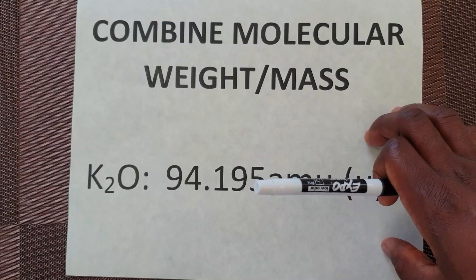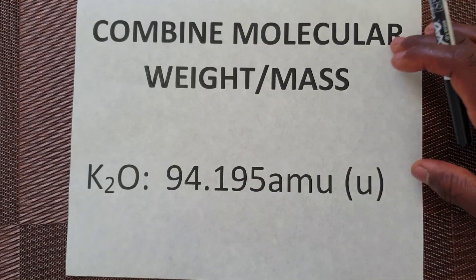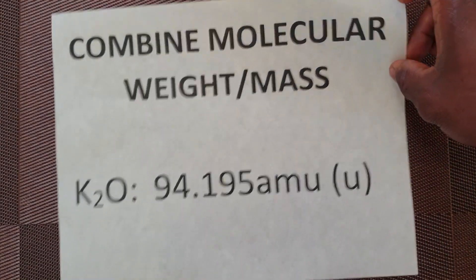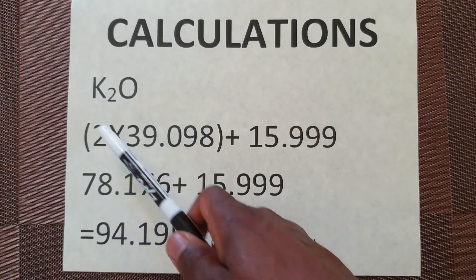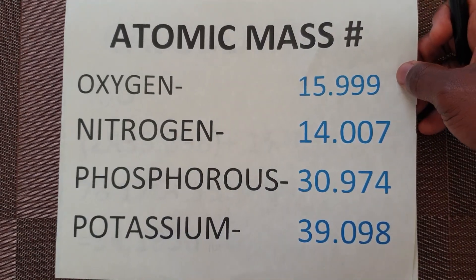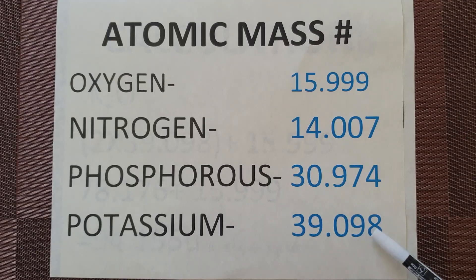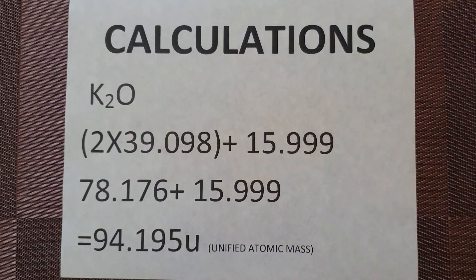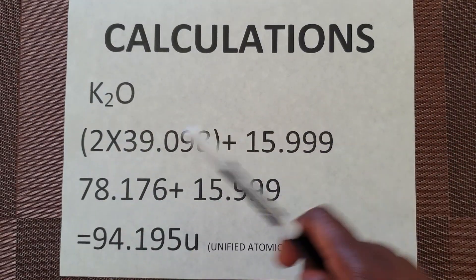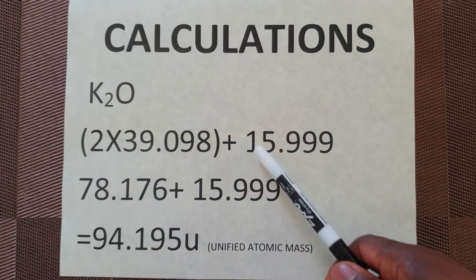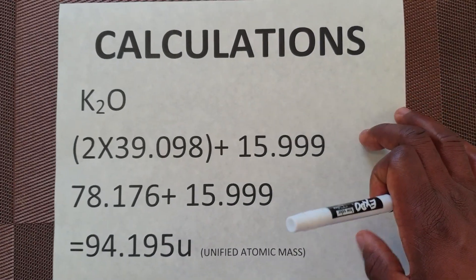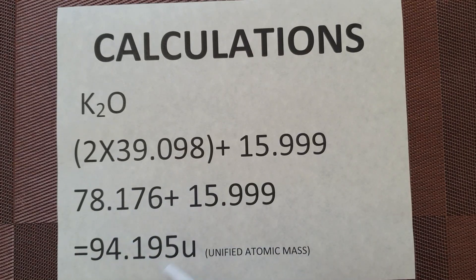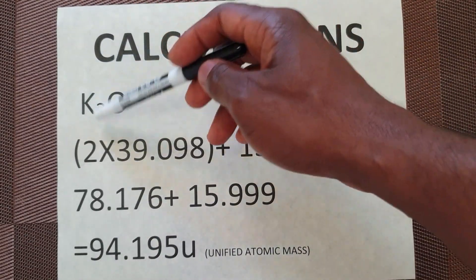Let us move on to potassium — K2O — which is the guaranteed analysis of potassium on the fertilizer bag. The combined molecular weight of K2O is 94.195, and the calculation is basically the same as phosphorus, only the atoms represent different values. In K2O, there are two atoms of potassium and one atom of oxygen. The atomic mass of potassium is 39.098 and oxygen is 15.999. Therefore, because there are two atoms of potassium, we multiply 2 times 39.098 plus 15.999 because there is only one atom of oxygen. Adding them together we get 94.195. We are interested in potassium only.